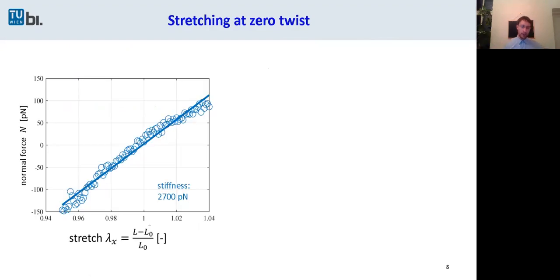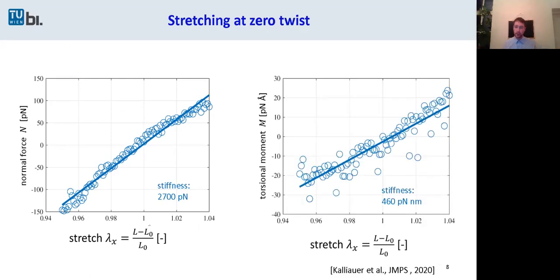And now I want to show you the results of stretching at zero twist. So we stretch, but we do not allow any rotations. So as we expect from continuum mechanics, if we stretch something, we get a normal force. But here in DNA, it's a little bit different. If we stretch, we also get a torsional moment. The stiffness we call the warping stiffness.